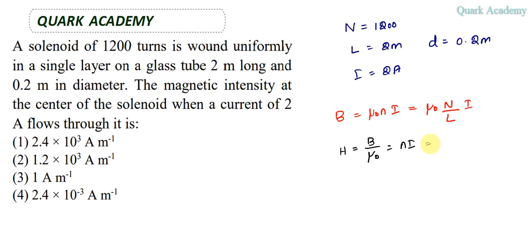these values. Capital N is 1200, L is 2, and current is 2. The 2s cancel and we get 1200 amperes per meter. The unit is amperes per meter. 1200 can be written as 1.2 × 10³, so option 2 is the correct answer.